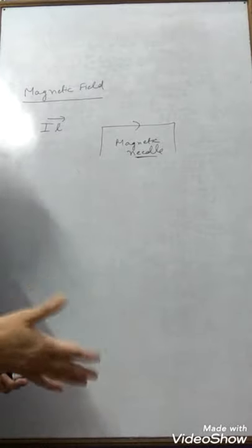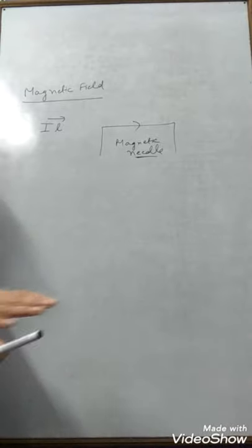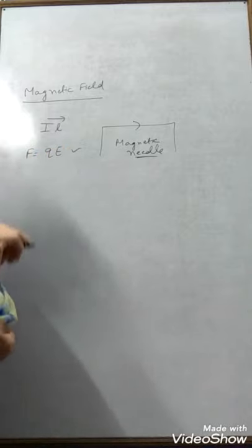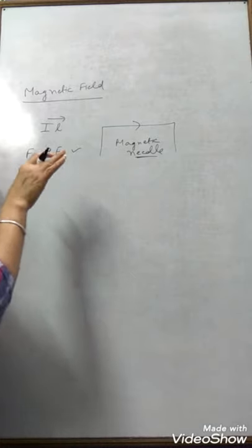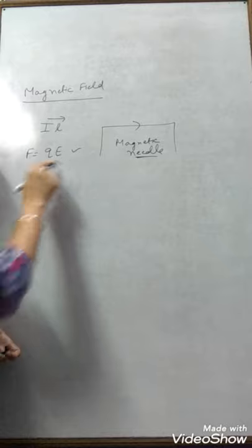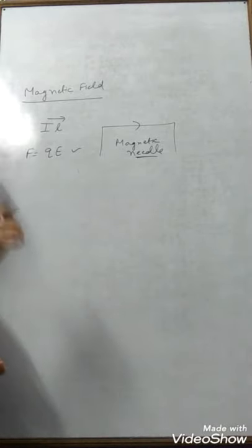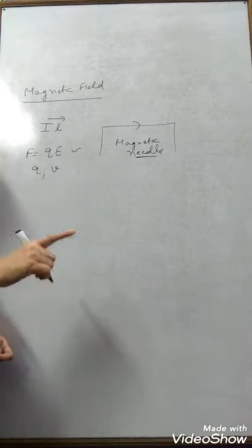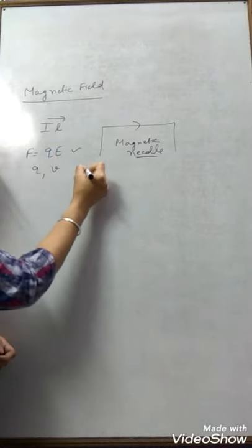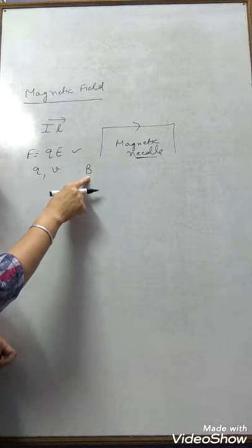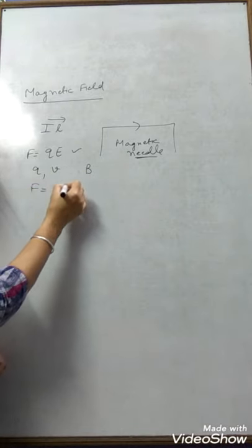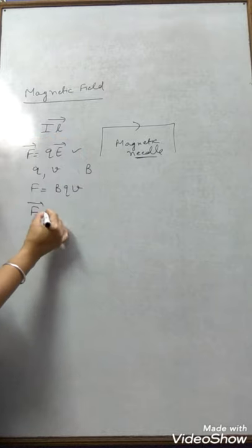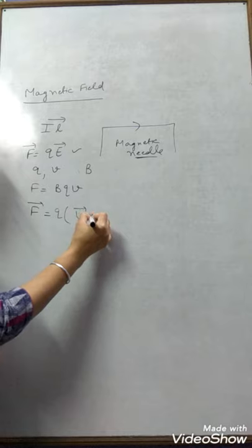We know that when a charge is placed in an electric field, it experiences a force QE — that we have studied in electrostatics. The force on a charge placed in an electric field is QE, called the electric Lorentz force. Similarly, when a charge of velocity V is placed in a magnetic field B, this charge also experiences a force BQV.